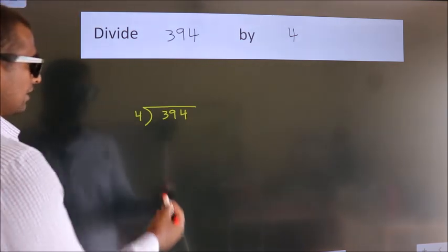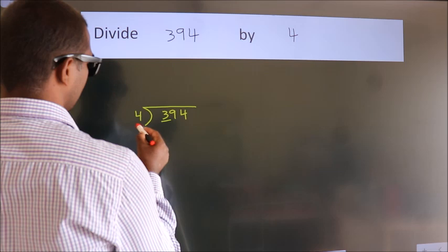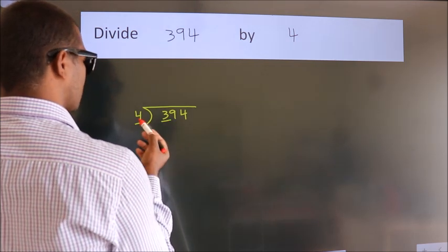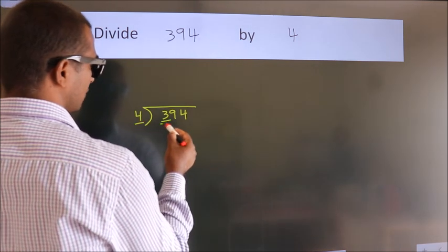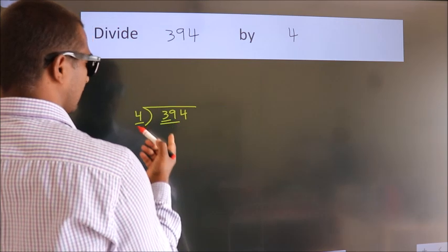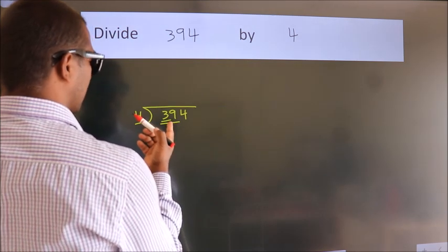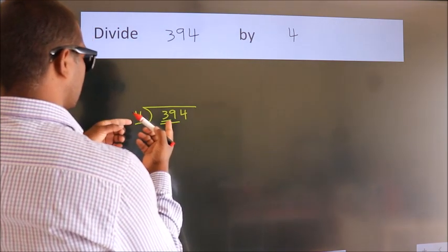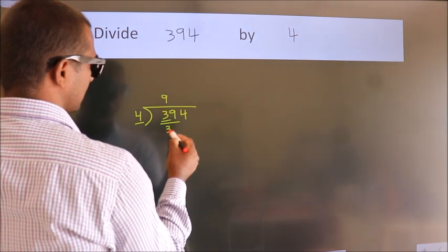Next, here we have 3, here 4. 3 is smaller than 4, so we should take 2 numbers: 39. A number close to 39 in the 4 table is 4 times 9 equals 36.